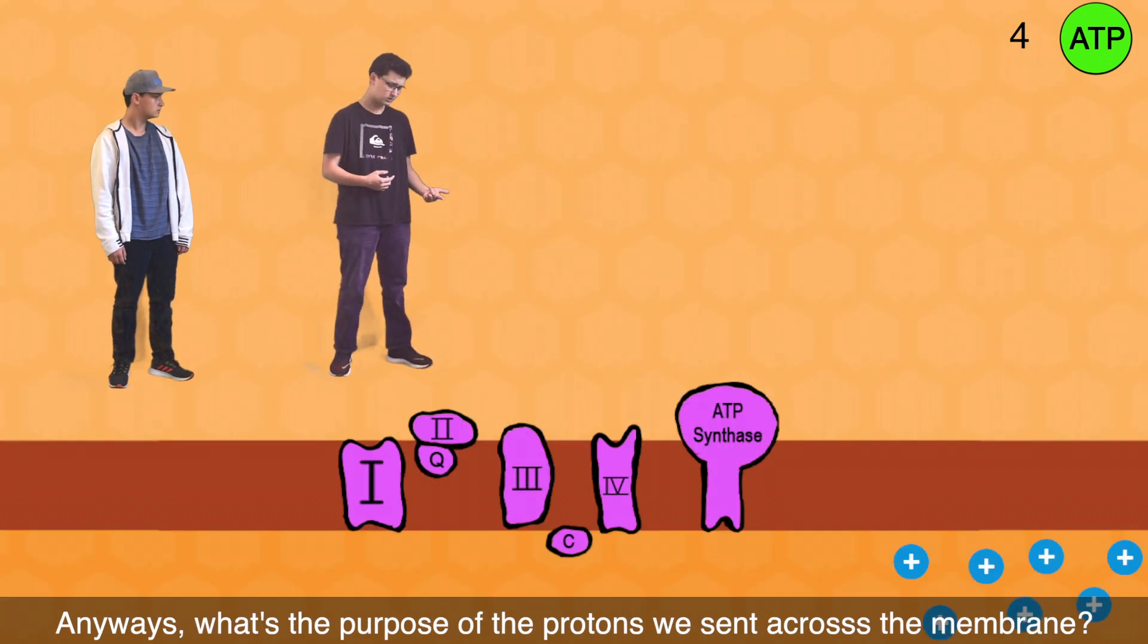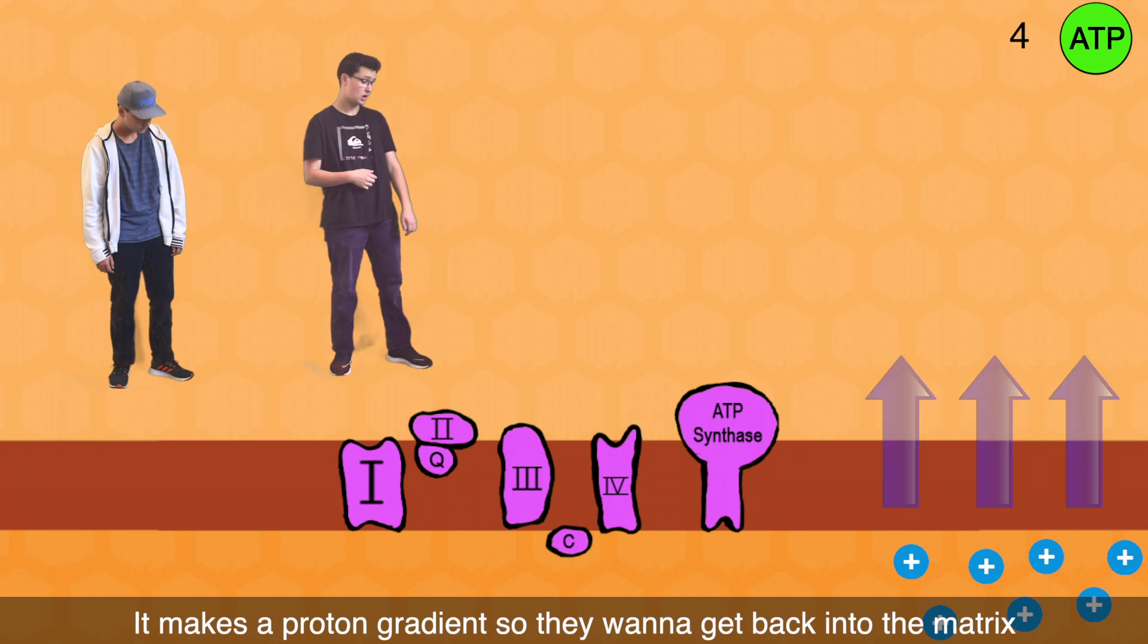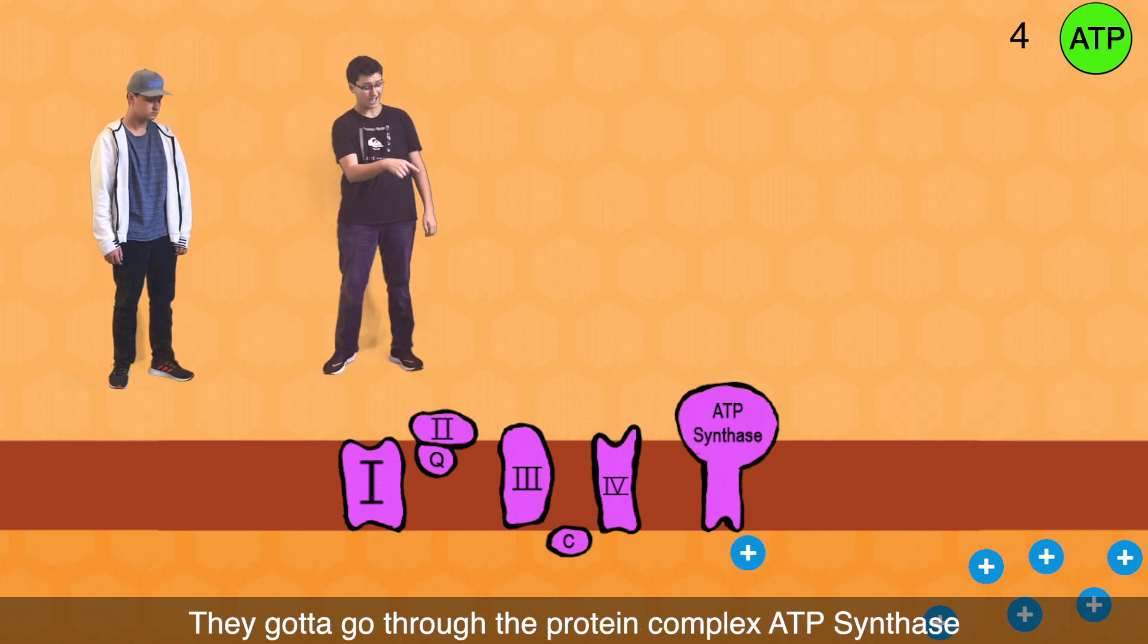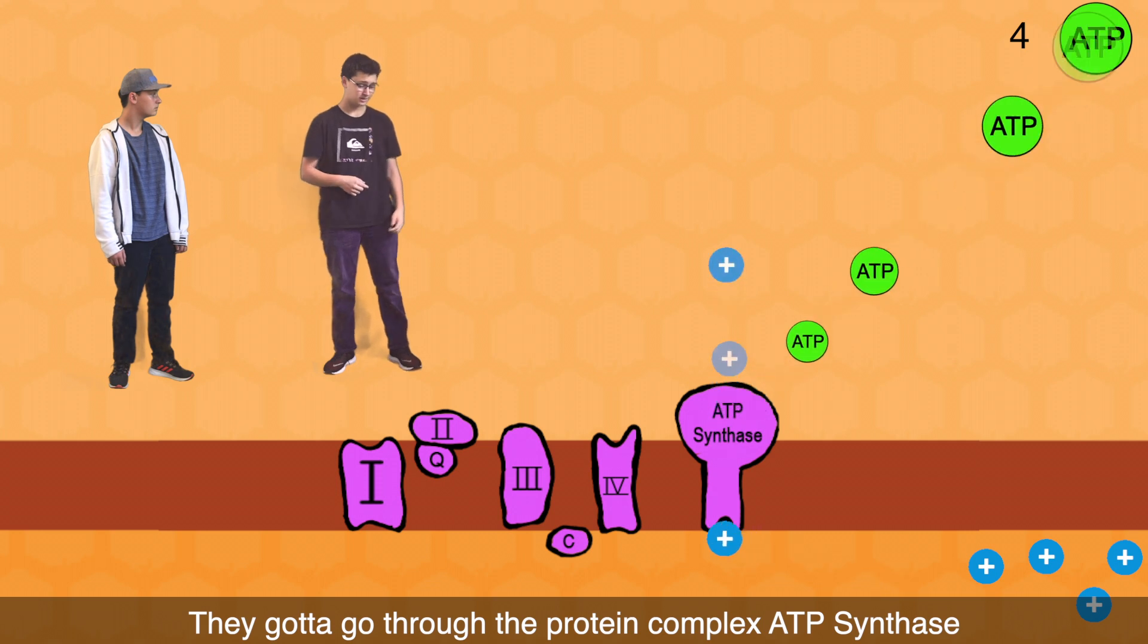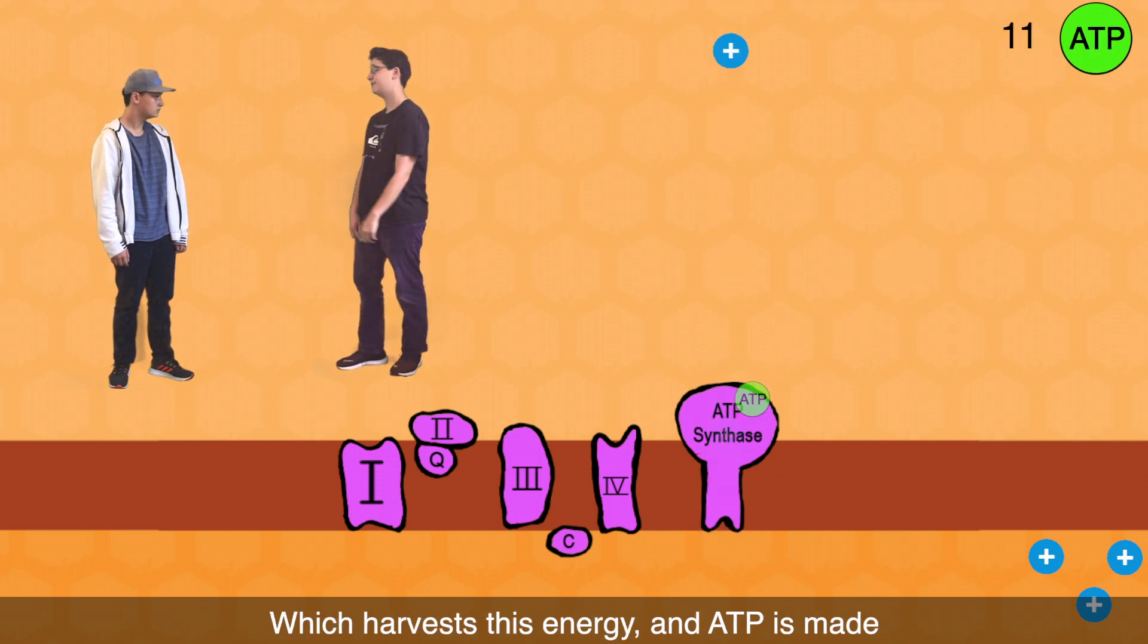Anyways, what's the purpose of the protons we sent across the membrane? It makes a proton gradient so they want to get back into the matrix. They gotta go through the protein complex ATP synthase. Which offers this energy and ATP is made. Whoa!